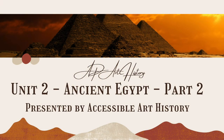Welcome back to the Accessible Art History YouTube channel. Today I'm wrapping up the AP Art History images from Egypt. There are a lot of them, so I had to separate it into two videos. You'll find part one linked in the description box below and in the corner. The remaining images are from the New Kingdom period, which was filled with expansion, change, chaos, and of course amazing art.